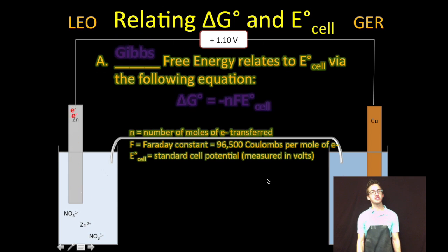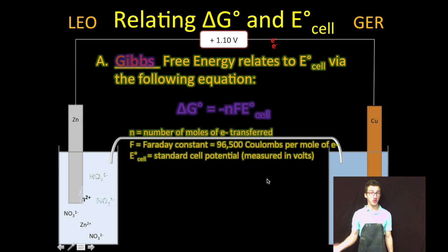So Josiah came up with the following equation that relates Gibbs free energy to cell potential. We already know how to figure out cell potential—we're masters of cell potential. This equation just relates the two.